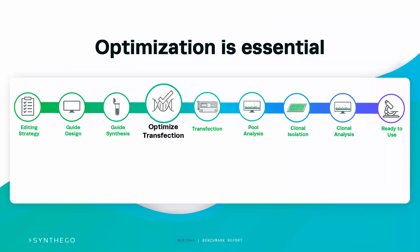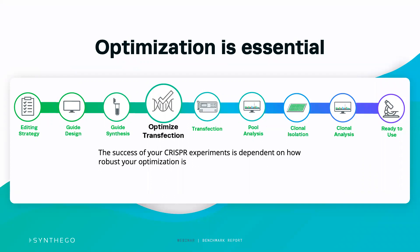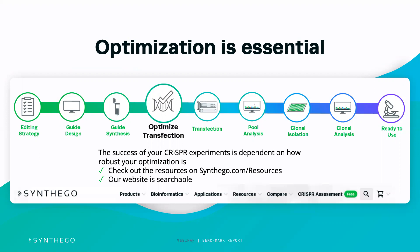I hope I've been able to show you that optimization is critical for how well your CRISPR experiment is going to go. We have a lot of resources on synthego.com/resources that will help you determine how to best optimize your particular cell type based on the application you're doing. Our website is also searchable — use the magnifying glass on the top navigation of every page within the Synthego website to find what you're looking for, as we do have a lot of resources and we want to make it easy to navigate.